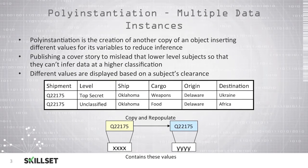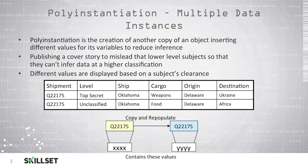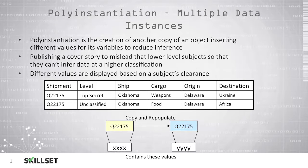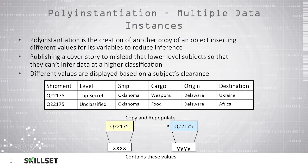Polyinstantiation is where you have multiple instances of data. You're basically creating another copy of an object with different values for its variables in order to reduce the ability for someone to infer data. You're basically publishing a cover story to mislead someone with a lower classification so they can't infer data at a higher classification. You would display a different value based on the individual's clearance level.